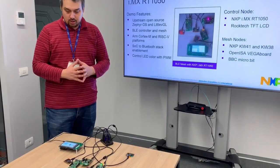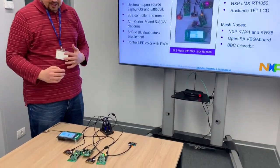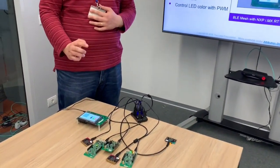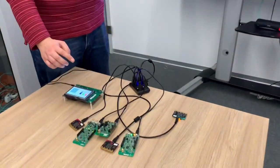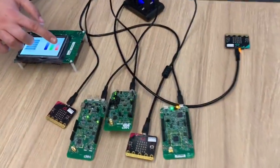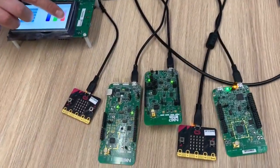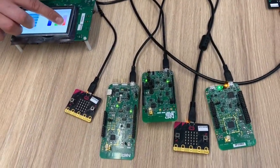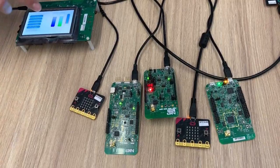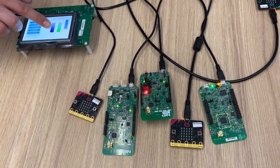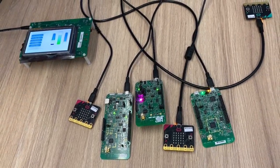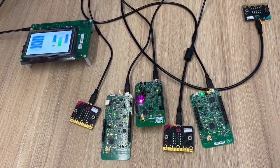Now I'm going to select the KW41 board and I'm going to make the RGB LED by means of BLE mesh — I'm going to make it full red. As you can see it's red. I'm going to add a tint of blue and as you can see now it has changed to magenta.